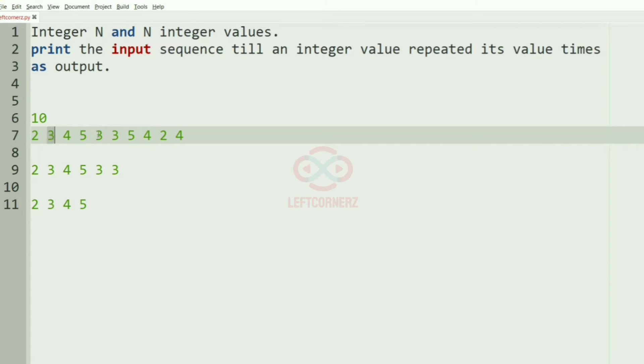So after that we have again 3. So 3 times 3 is occurring, that is an integer value is repeated its value times. So since 3 has occurred for 3 times, we'll stop it here. And this will be our output.